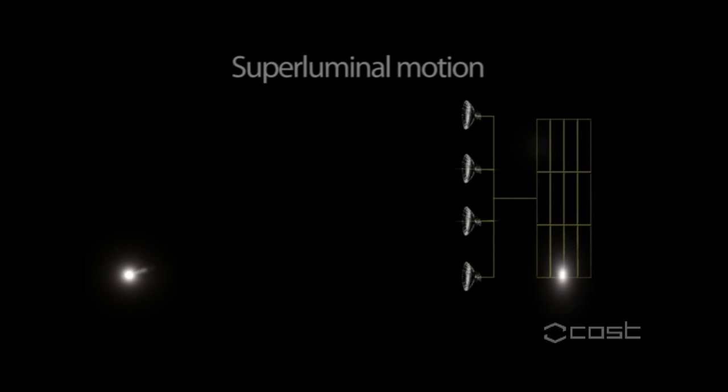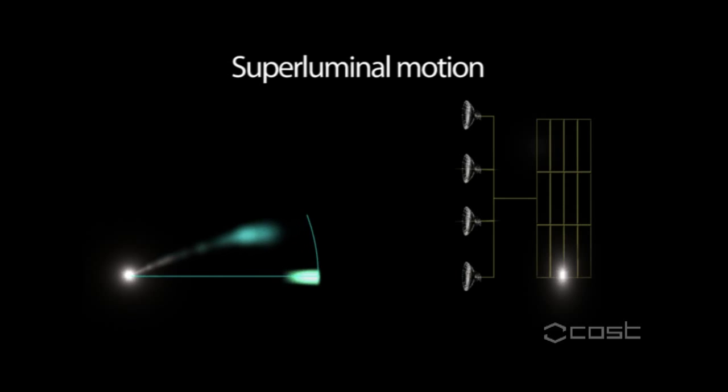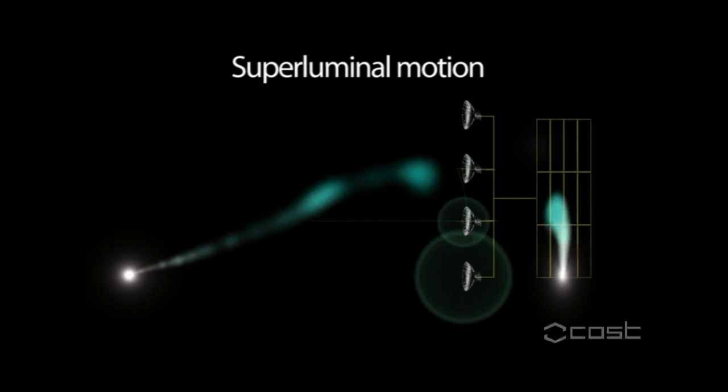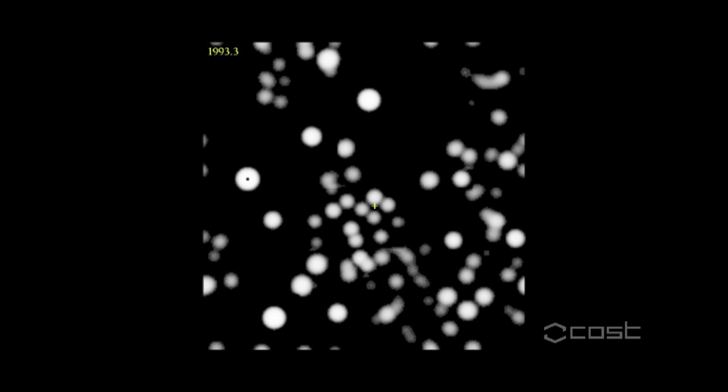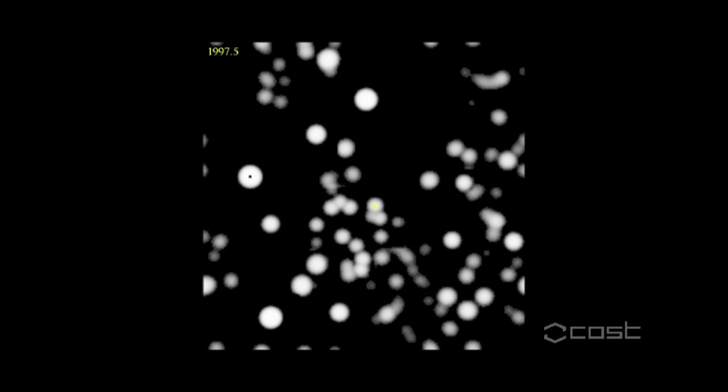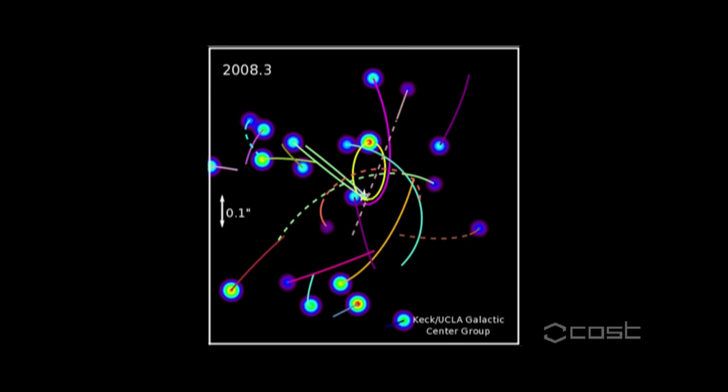The evidence from relativistic radio jets, variability from radio to X-rays, and the kinematics of stars near our galactic center leave no doubt that there is nothing else that could produce the observations.